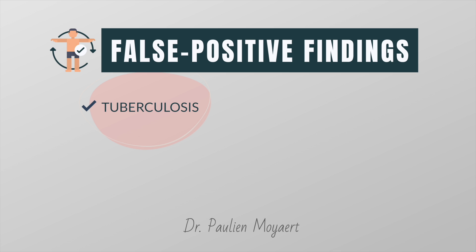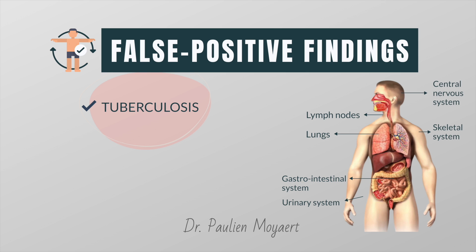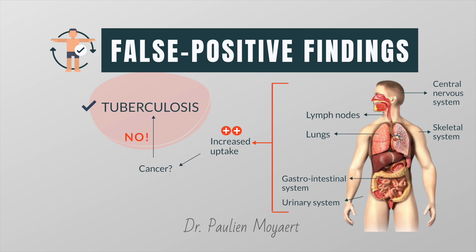Tuberculosis is one of the oldest diseases to affect humans. It usually affects the lungs, but in one third of cases other organs are also involved, such as lymph nodes, the urinary system, the gastrointestinal system, the skeletal system, and the central nervous system. All of these areas of infection or inflammation will demonstrate intense uptake of FDG, and this will result in an incorrect diagnosis if not correlated with the patient's clinical history and biopsy.